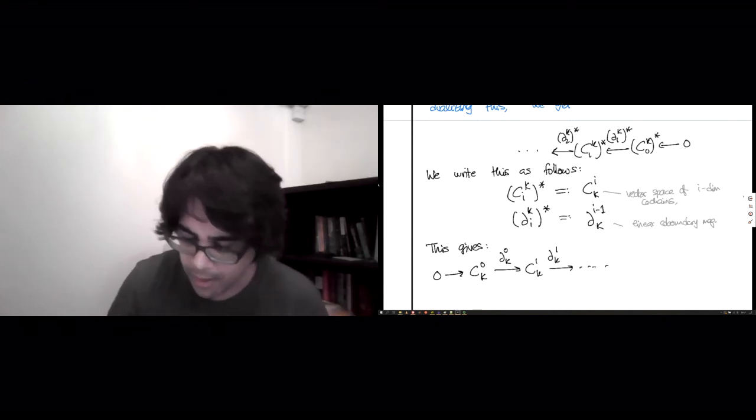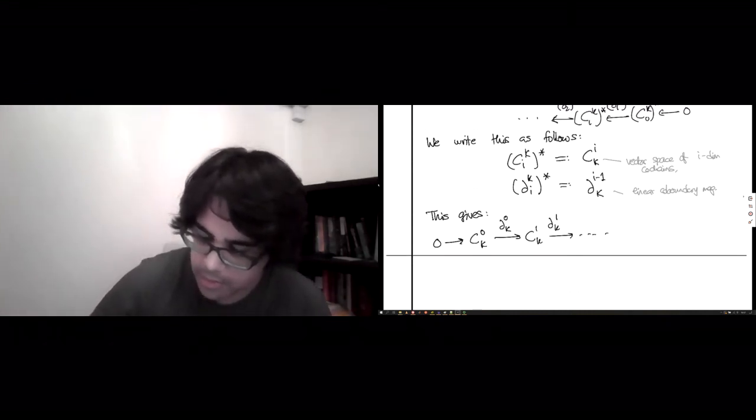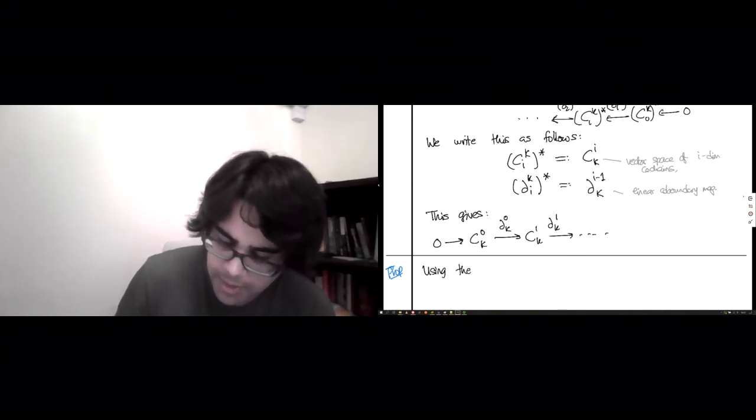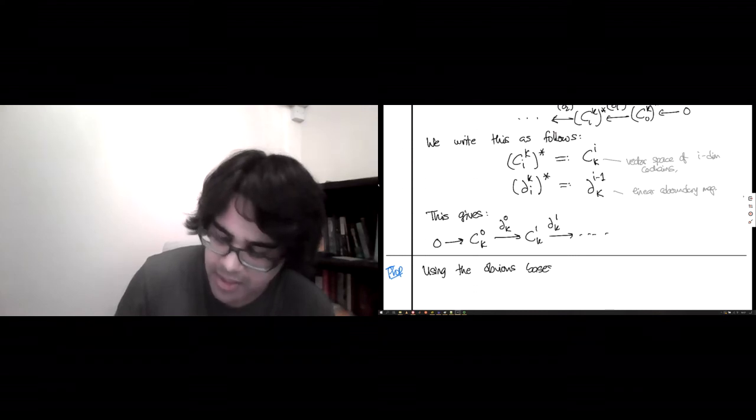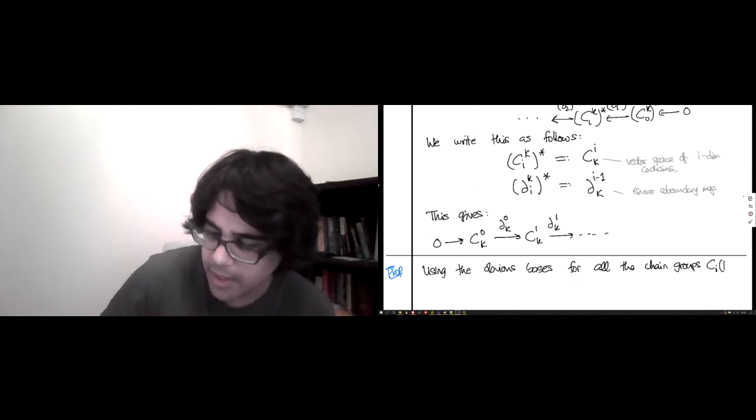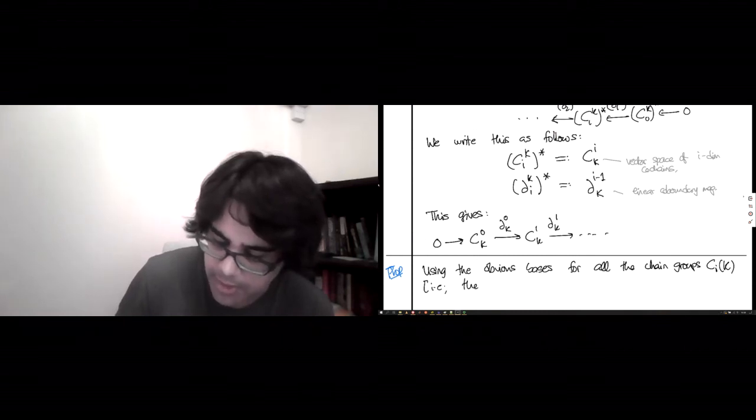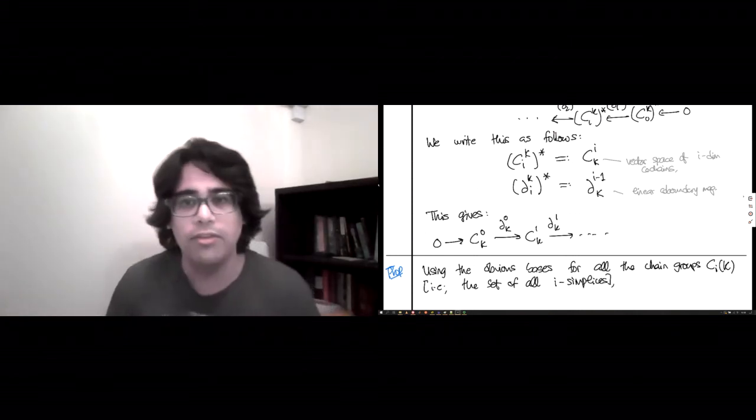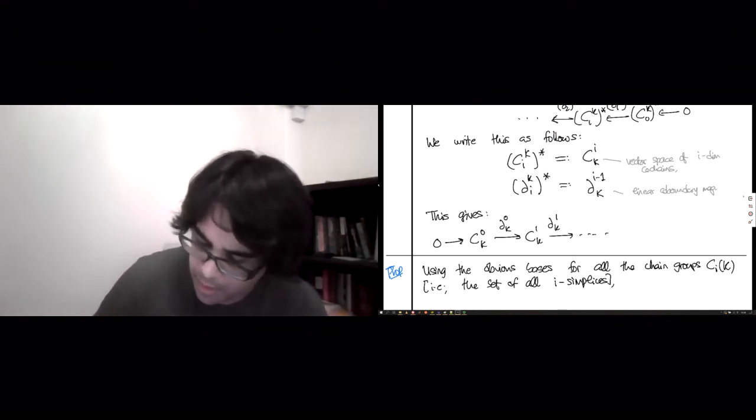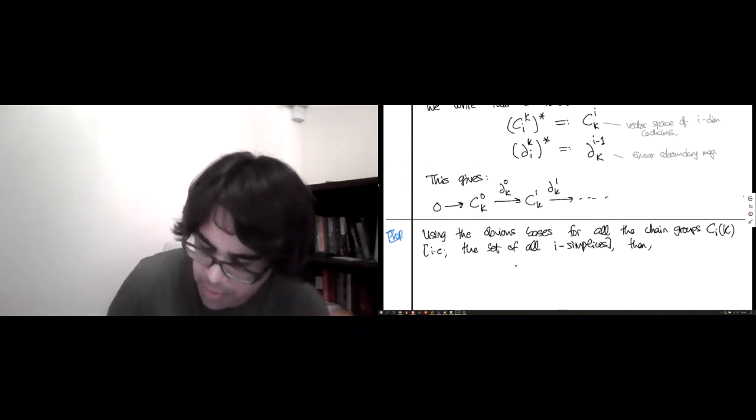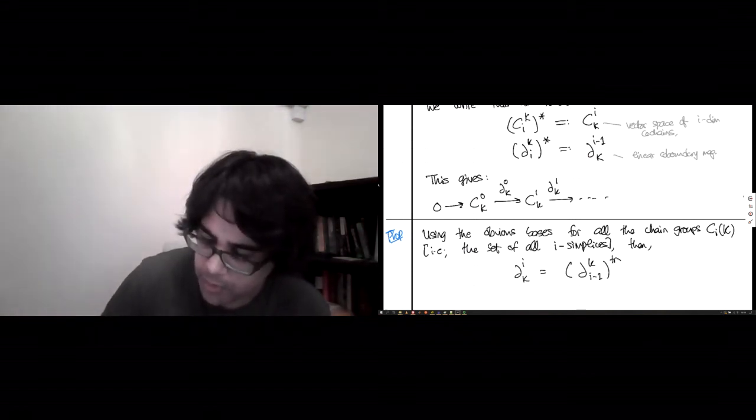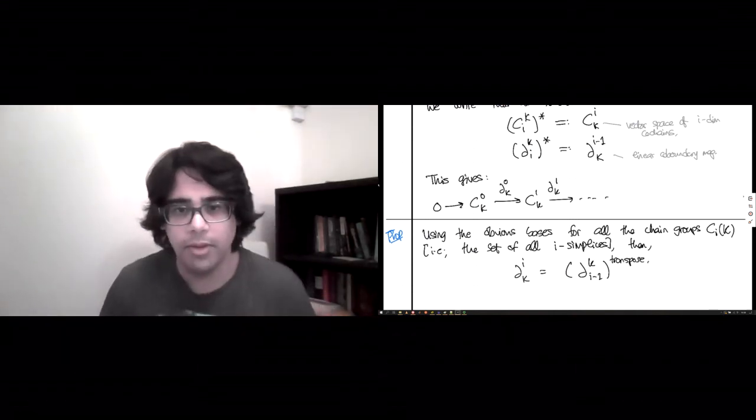The point is that in the simplicial basis, let's write that as a proposition. Using the obvious basis for all the chain groups ci(K), namely the set of all i simplices, if you use this simplex-induced basis, then the co-boundary maps are precisely the transposes of the boundary maps shifted.